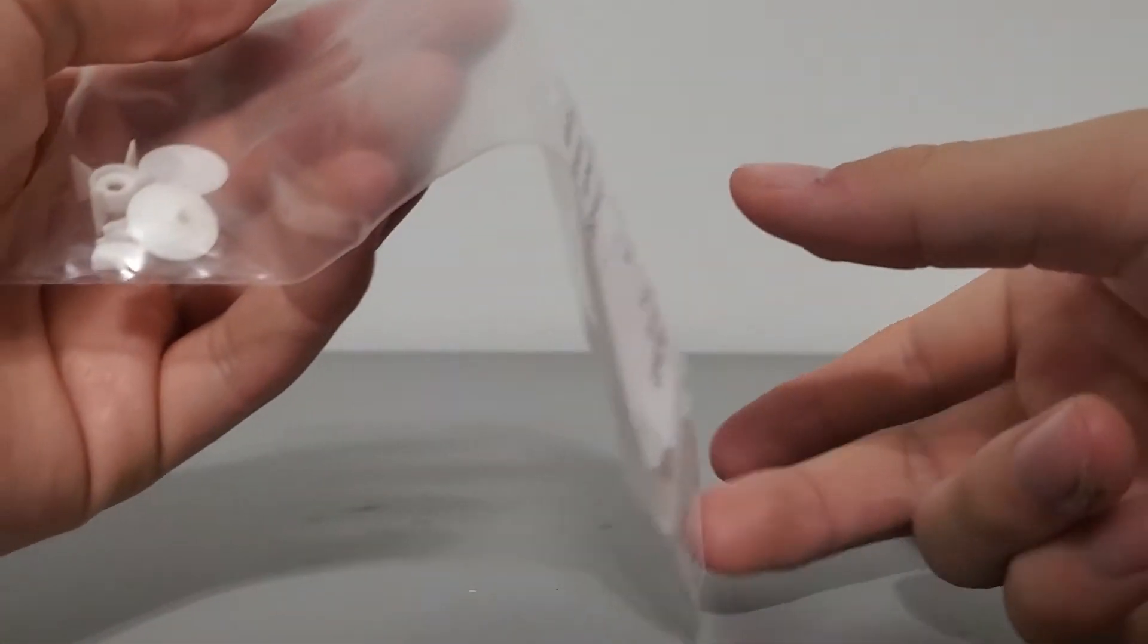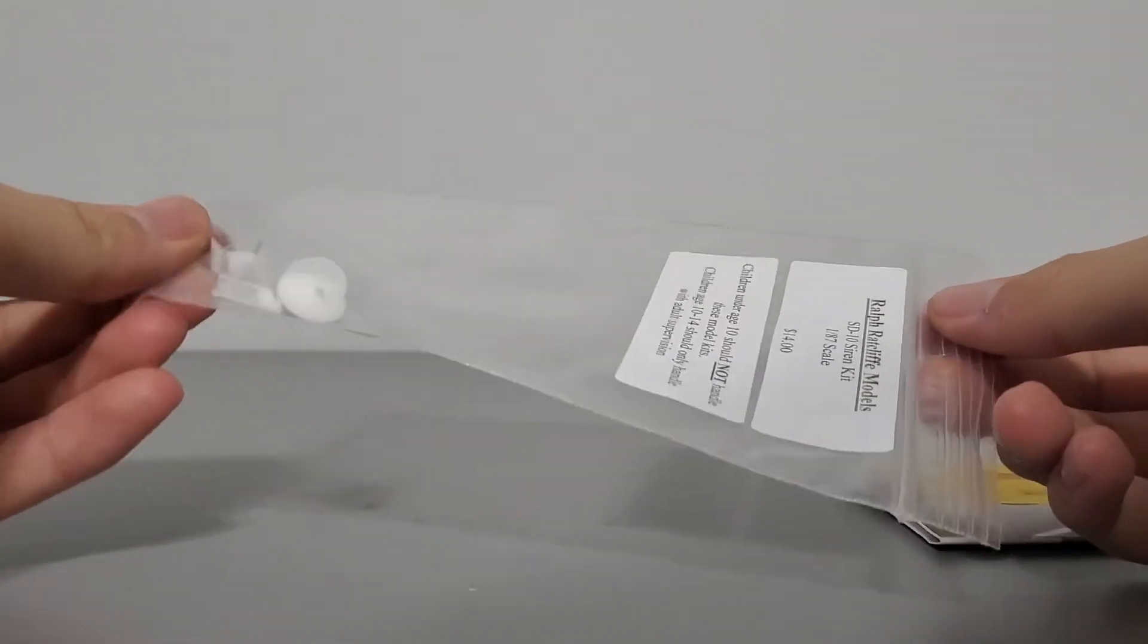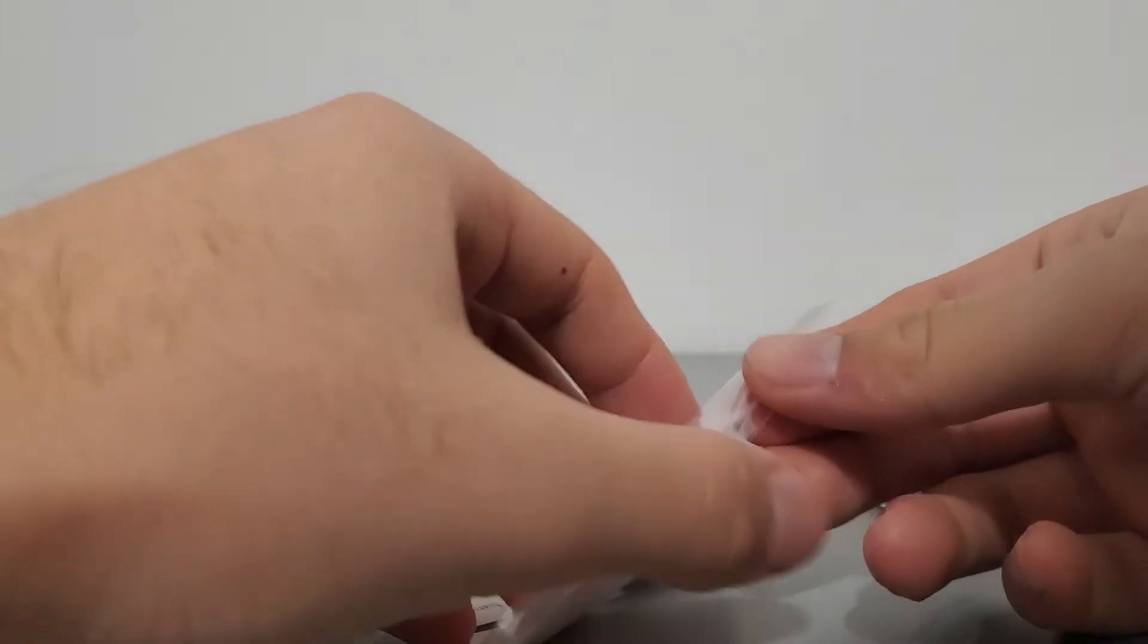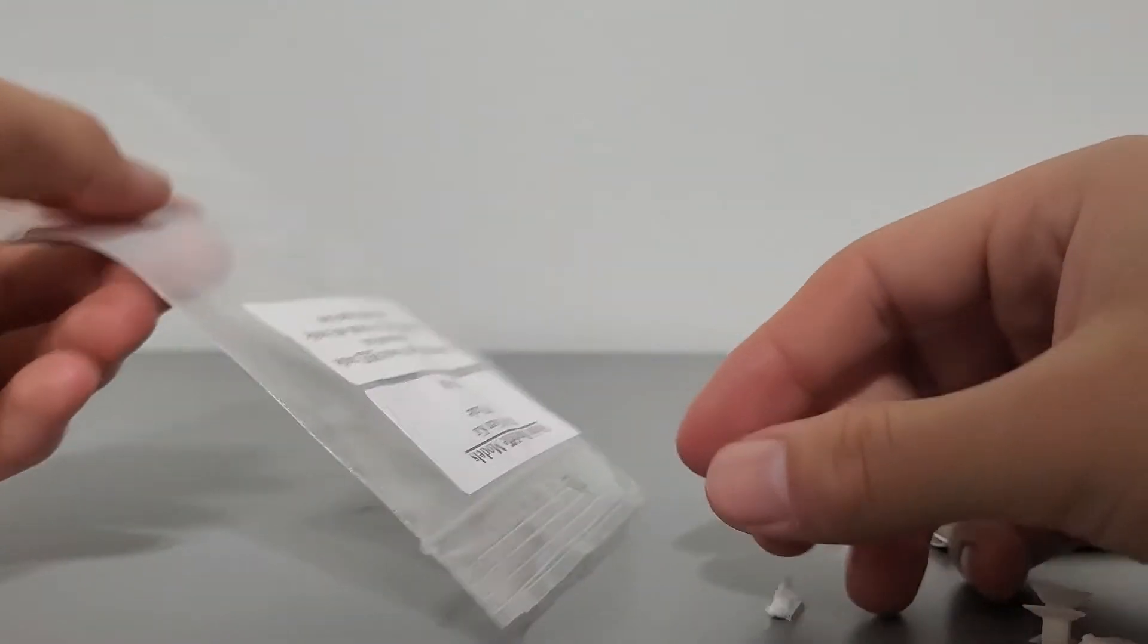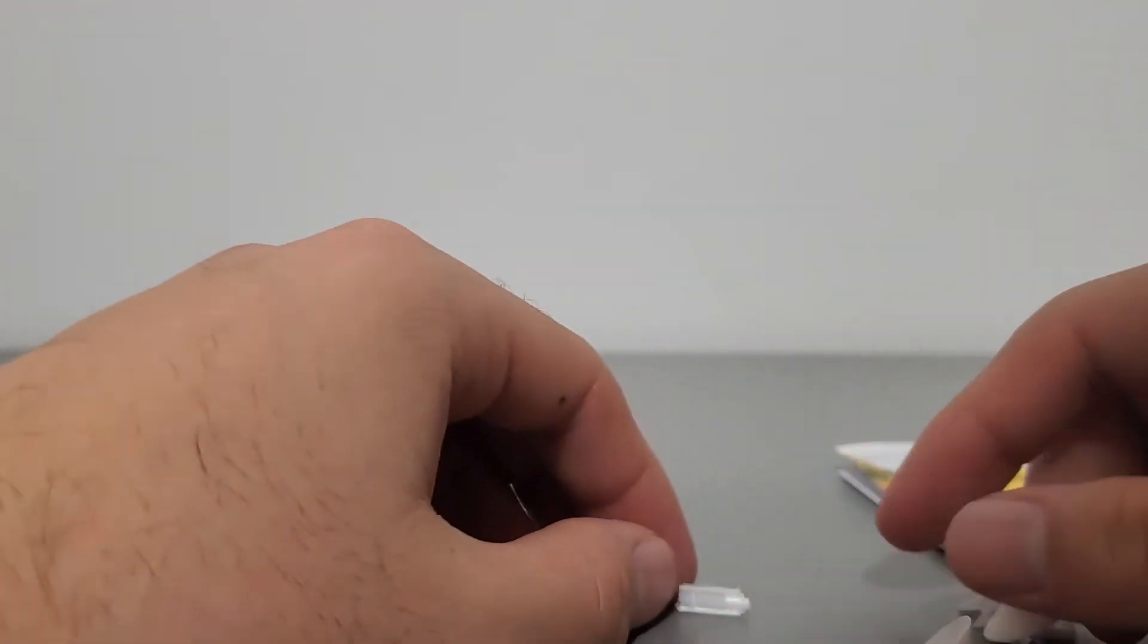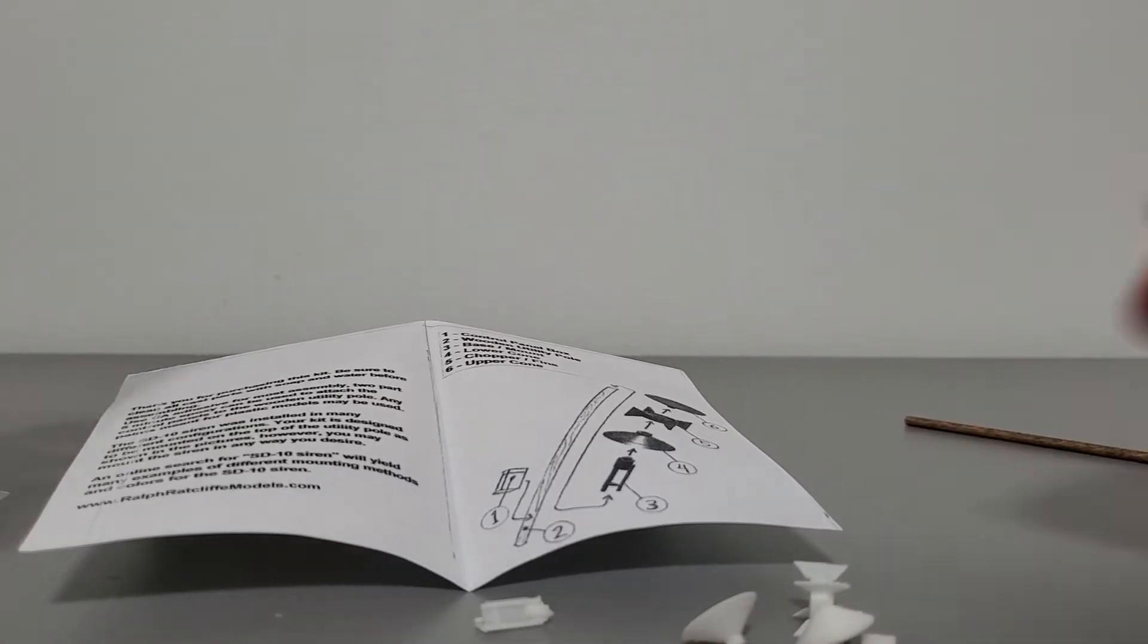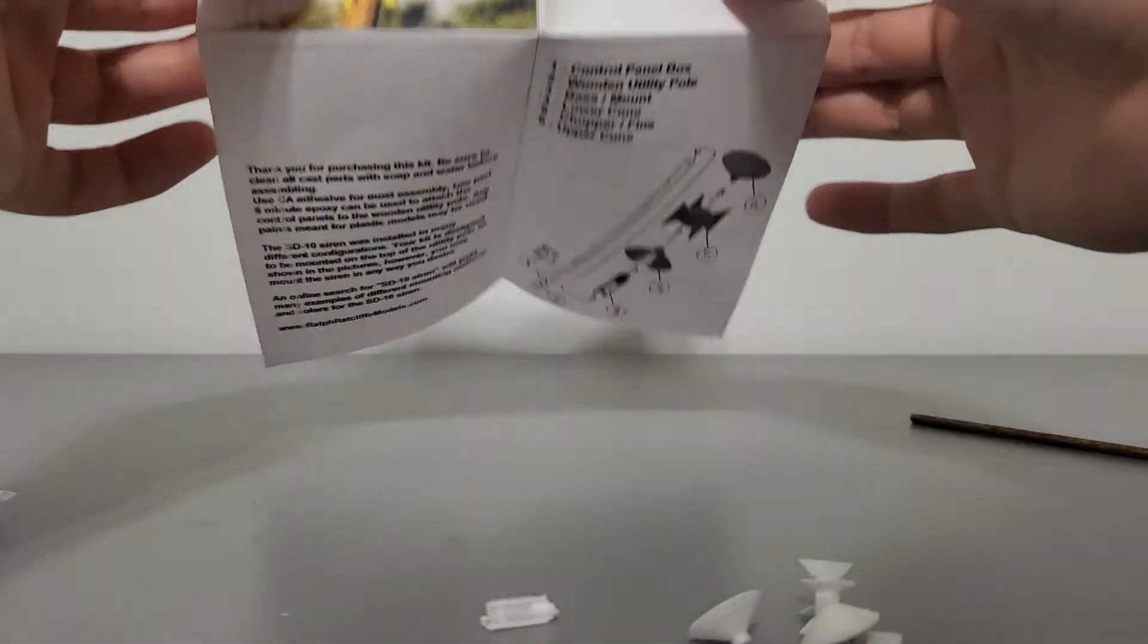This I think is actually my second time building, this is actually the first time I built something other than an HO scale Thunderbolt siren kit from Ralph McCliffen models. I did build the Model 2 and Model 5 a while ago. So, before I discuss the parts, I'd like to talk about the instructions.